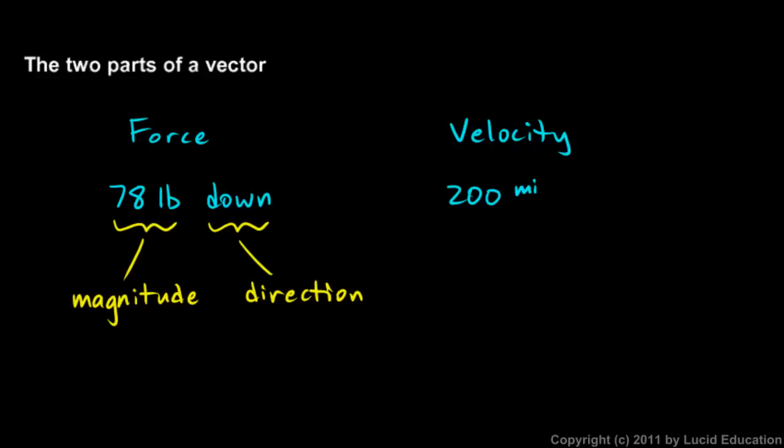And here's an example of a velocity. 200 miles per hour to the east. Say this plane is flying this fast in that direction. So we have again two parts. We have the how much part, and again we have a unit on that. That's how fast the plane is going. And that's the direction.